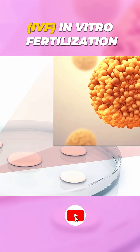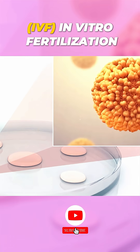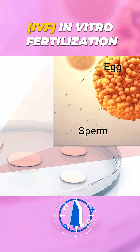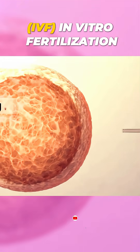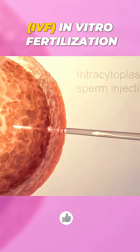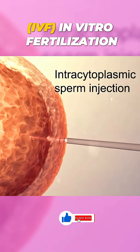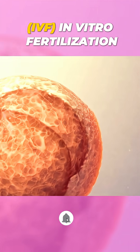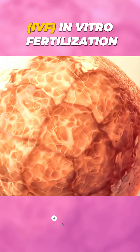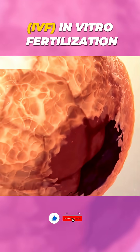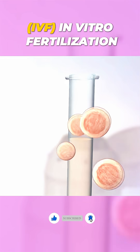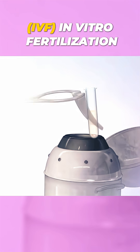Next, in the fertilization stage, collected eggs are fertilized either by insemination or by intracytoplasmic sperm injection. Fertilized eggs, or embryos, are then monitored for growth, and some may undergo assisted hatching to aid implantation.